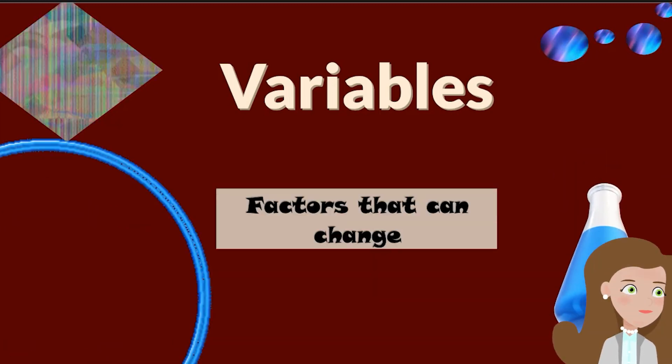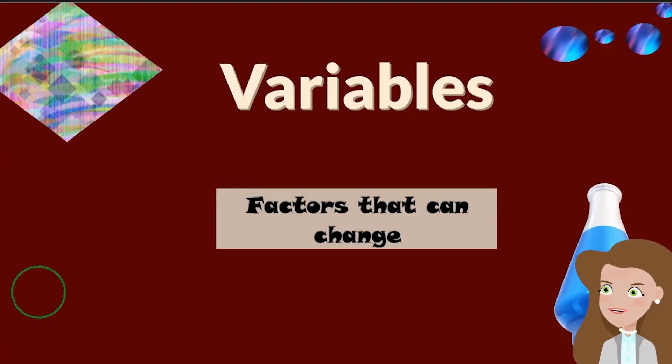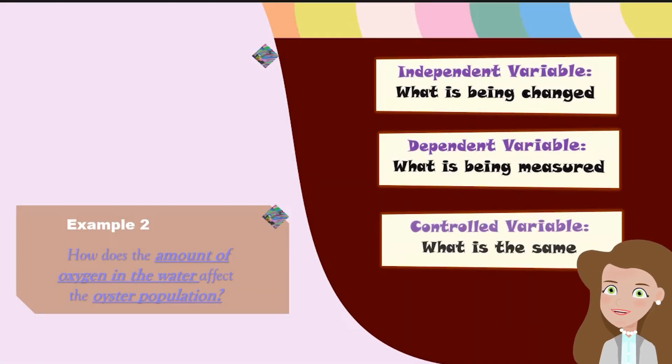Variables, or in other words, these are the factors that can change. There are three different types of variables. The first one is your independent variable. Independent variable is what is being changed. So let's take a look at that example one.